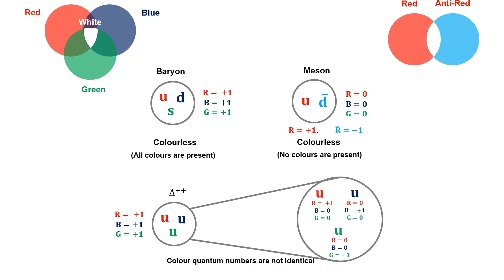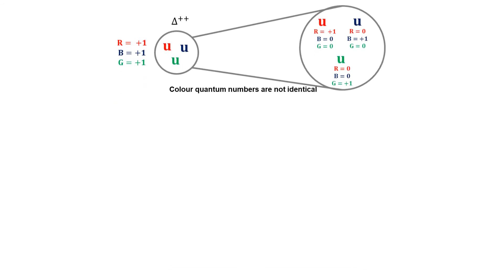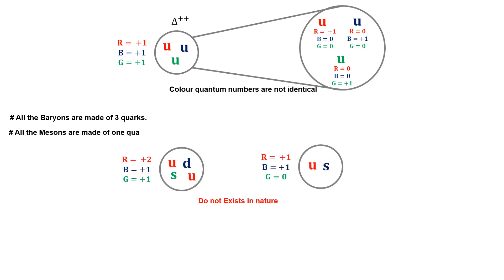The same applies to mesons: mesons are made of a quark and an antiquark whose color quantum numbers are opposite, making the meson colorless. This is why all baryons found in nature are made of three quarks — not two or four — because any other combination would either repeat a color or leave the particle non-colorless.